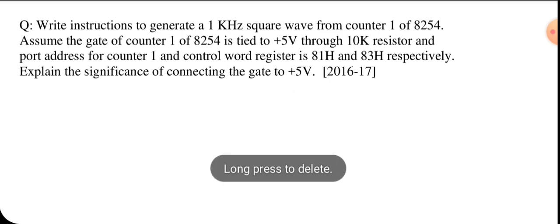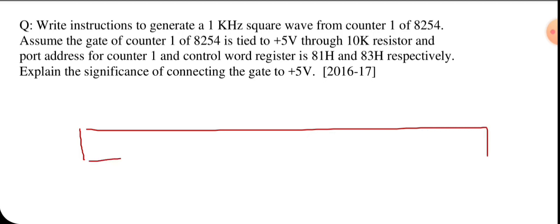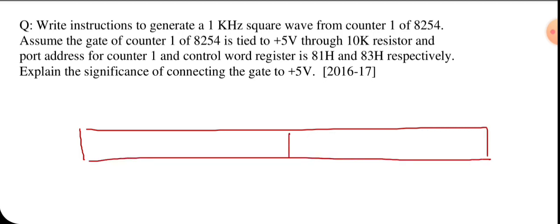Now according to the question, we need to generate a square wave using counter 1. So first we need to write the control word. The control register is an 8-bit register, so we will mention all its bits. We need to determine what the content of the control word register should be so that it performs the required operation.